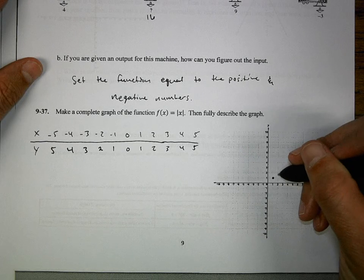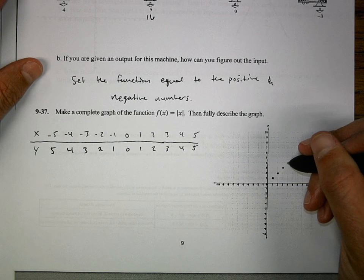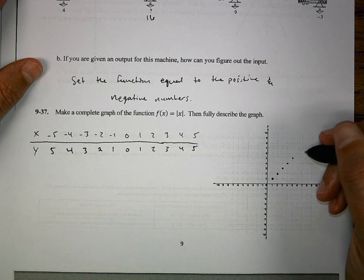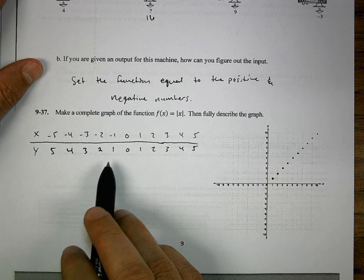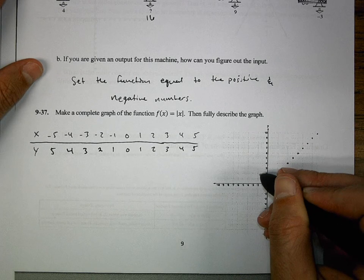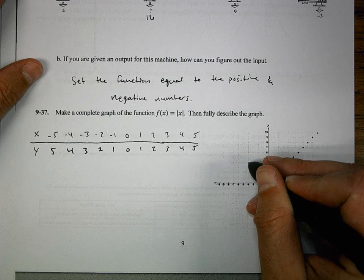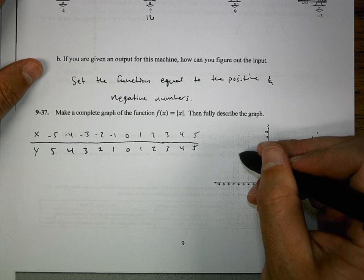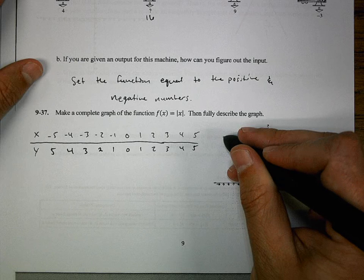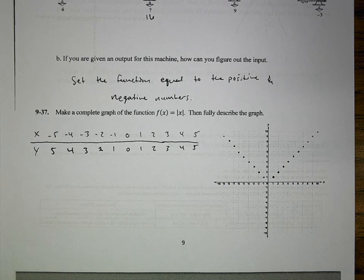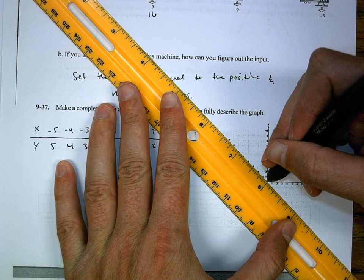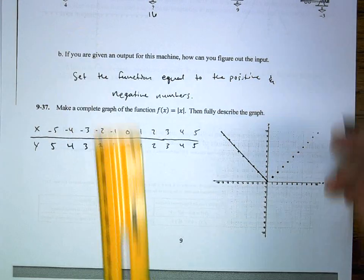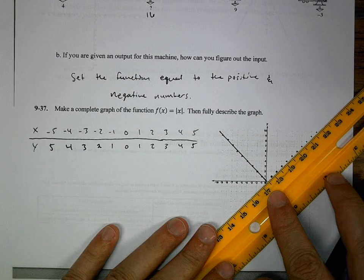Right 1, up 1, put a dot. And we just keep going with this absolute value function. But it's also symmetric, so on the left side we've got to do the same thing — go up 1, over 1 in the other direction. I'm going to use a ruler because I need to make this into a straight line.